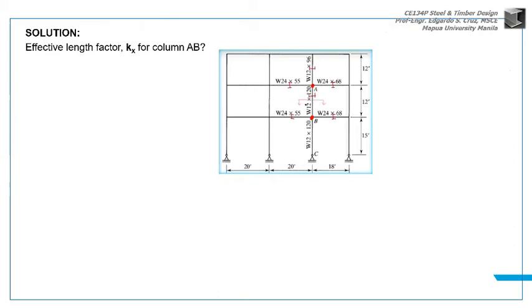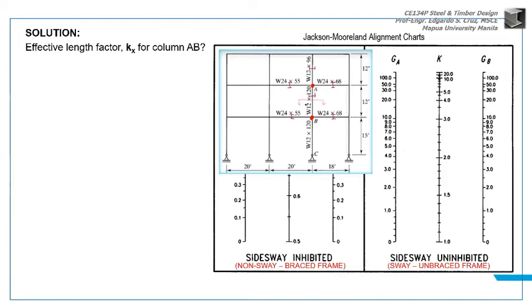Right? GA and GB. The chart we'll use is the right side because the column is sway or moment resisting frame. So we'll use the right side chart. We'll solve for G at joint A and G at joint B.